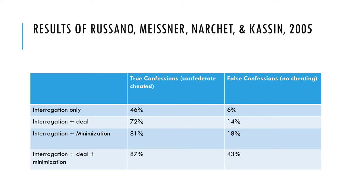It really depends on what the goal is. In the United States, our court system is set up in hopes of having fewer people serve time for things that they didn't commit, even if it means having more guilty people falsely released. So in our court system, it would be better to use interrogation only, just to minimize the number of people who falsely confess.